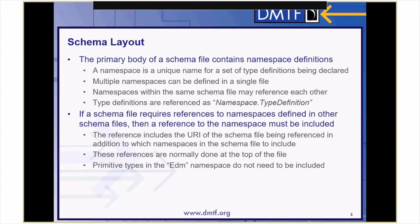A schema file following the CSDL format can be broken down into two sections. The primary body of a schema file contains the namespace definitions. A namespace is a unique name for a set of type definitions being declared by the schema file. It is possible to define multiple namespaces in a single file. Namespaces within the same schema file may reference each other. Type definitions are referenced as namespace dot type definition.